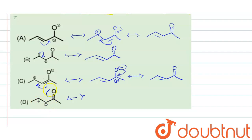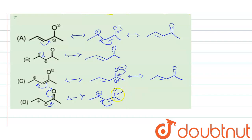In the last resonating structure, the electronegative oxygen abstracts the bonding pair of electrons. This negative charge delocalizes to form a pi bond, generating a carbocation at oxygen (O+). The pi electrons shift again, generating a positive charge at the adjacent carbon. Finally, oxygen donates its electrons to form a double bond and we get the stable molecule.